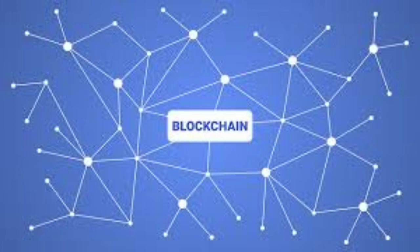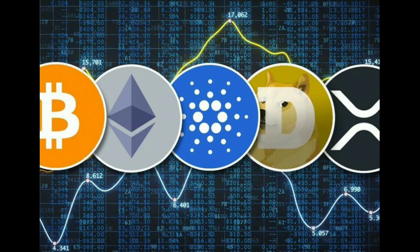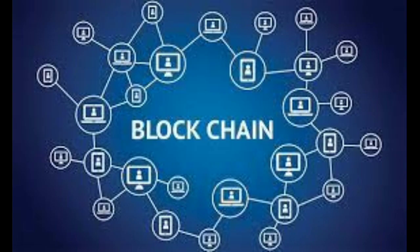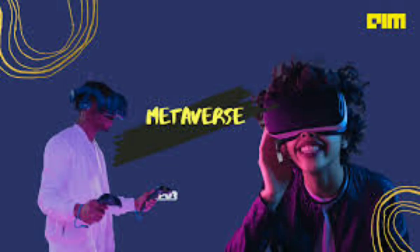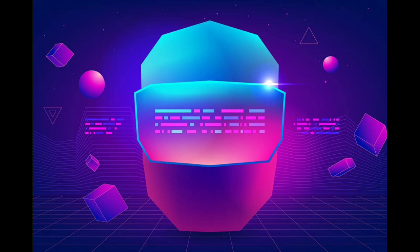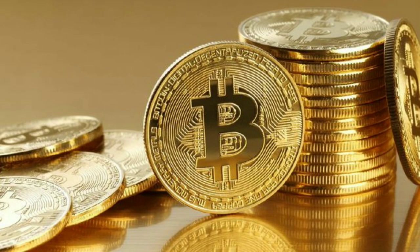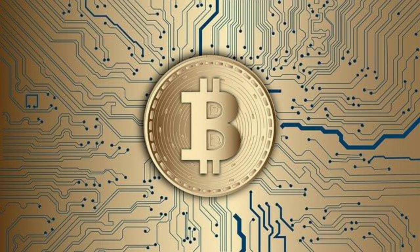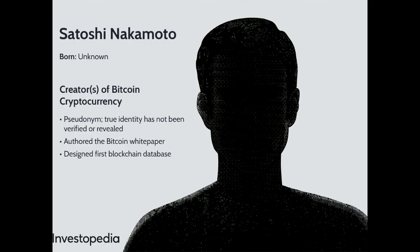Let's get into a discussion: why should there be blockchain, and what does it have to do with Bitcoin and other cryptocurrencies? Blockchain is a technology that has existed since the early 1990s but has only recently become popular because one of the digital currency technologies uses blockchain. Bitcoin is the most famous example of a public blockchain implementation.